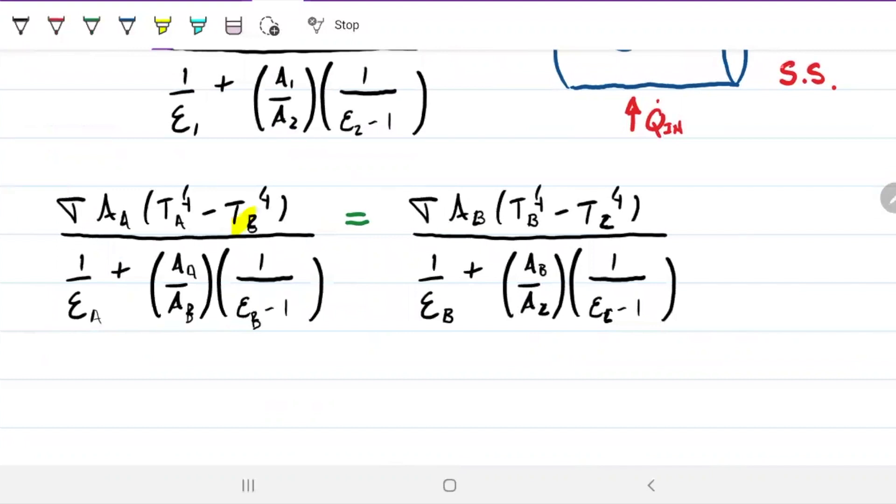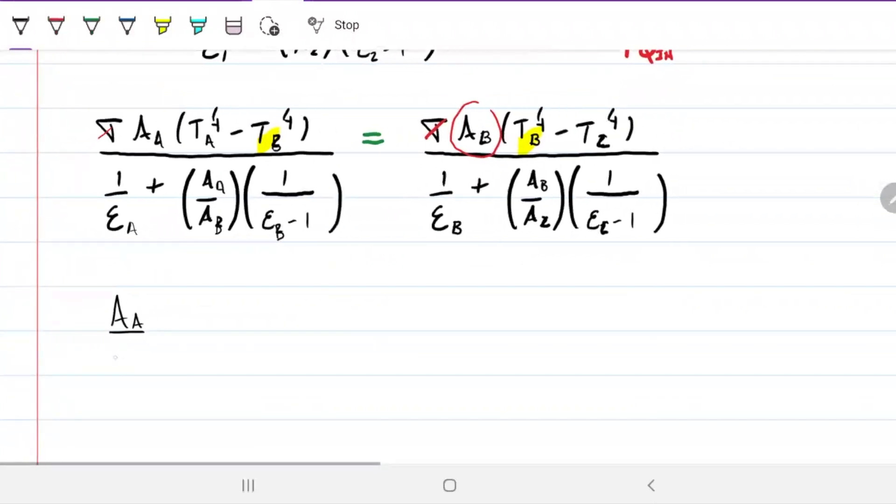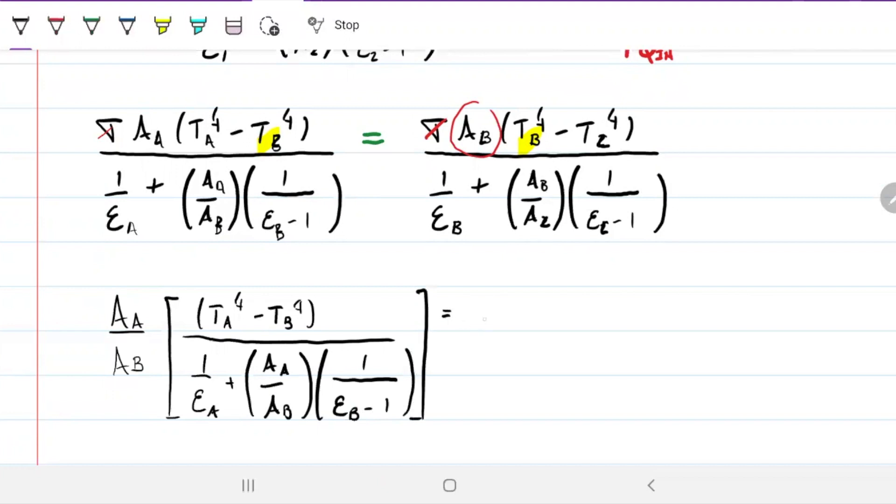So note that now we have all the data that we need except for TB, which is exactly what we're looking for. So to solve this, I'm going to eliminate sigma first. And I'm going to send this fellow here dividing both sides by area of B.